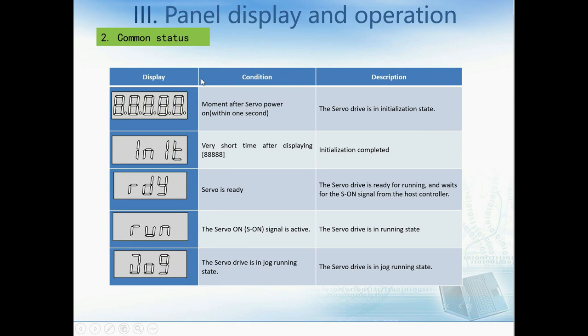Here are some common messages we can see on the LED. The first is '5-8', which means the servo drive is in initialization state. The second is 'IIT', meaning initialization is completed. The third is 'RDY', meaning the servo drive is ready and waiting for a servo-on signal from the host controller. The fourth is 'RUN', meaning the servo drive is in running state. The last is 'JOG', meaning the servo drive is in JOG running state.